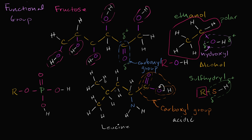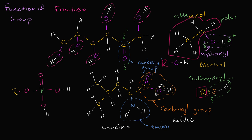This amino acid also has an amino group involving nitrogen — this is what gives the 'amino' part of the name amino acid. The amino group is generally basic because nitrogen has a lone pair of electrons that can form a bond with a hydrogen ion, picking up a proton. So it can absorb hydrogen ions, making it basic. This specific amino acid is leucine, which is important for muscle growth — it has a hydrocarbon chain with a carboxyl group at one end and an amino group.